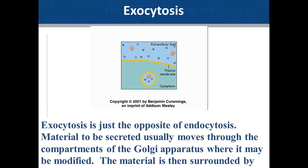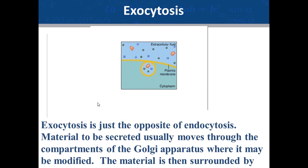Exocytosis is the opposite of endocytosis. Material that needs to be secreted moves through the compartments of the Golgi apparatus, is wrapped up into a vesicle, and then moves to the plasma membrane where it is excreted. Exocytosis is the movement of intracellular vesicles to the plasma membrane, where they fuse and release their contents into the surrounding fluid. This occurs predominantly in secretory cells such as mucus-producing cells or pancreatic cells that secrete enzymes into the digestive tract.